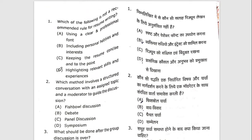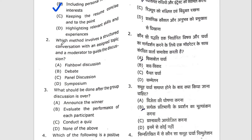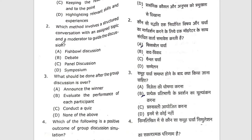First question: which of the following is not a recommended rule for resume writing? The right answer will be B — including personal hobbies and interests. Second question: which method involves a structured conversation with an assigned topic and a moderator to guide the discussion? The right answer will be C — panel discussion.